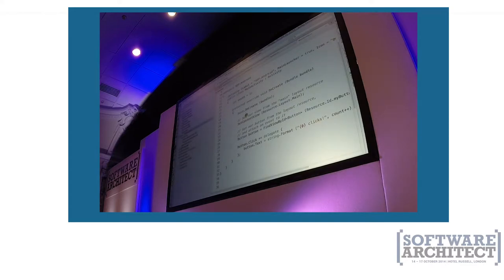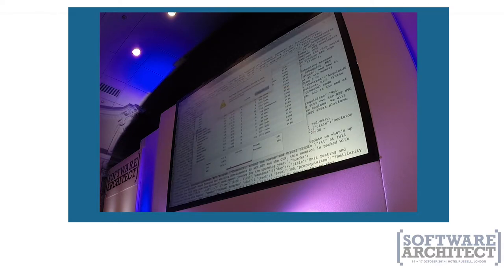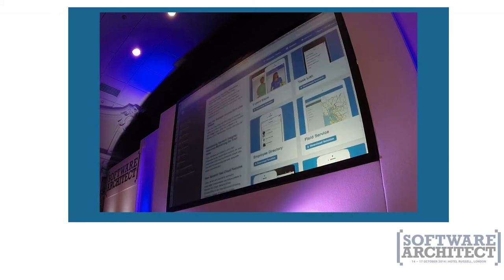Xamarin Studio became unresponsive — the spinning rainbow is Mac's way of saying something's taking a bit longer than anticipated — so I killed it and reloaded the solution. Back in the SDP.Android project, the layout file is gone so I can remove it from the project. In this Activity class I'm going to delete most of the code and create the UI from code in the onCreate method.